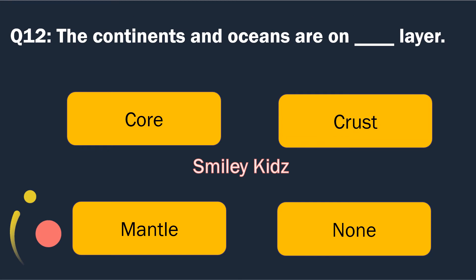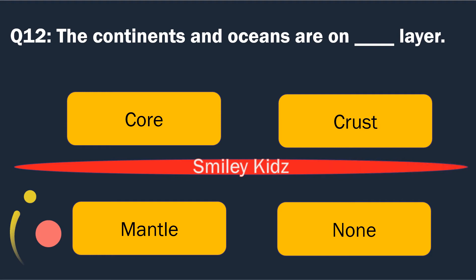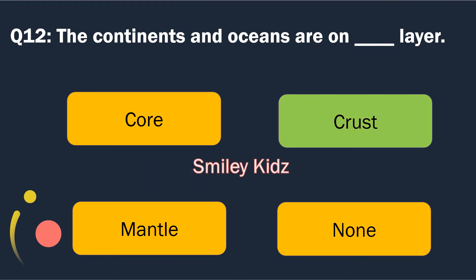Question number 12. The continents and oceans are on blank layer. Options are: Core, Crust, Mantle and None. The right answer is Crust. The continents and oceans are on the Crust layer.